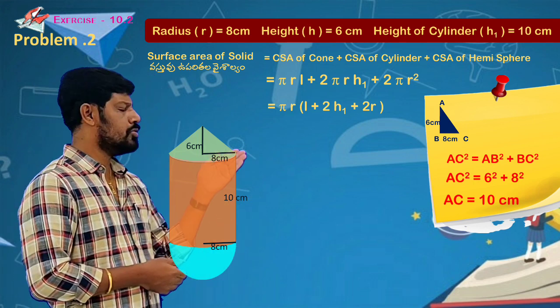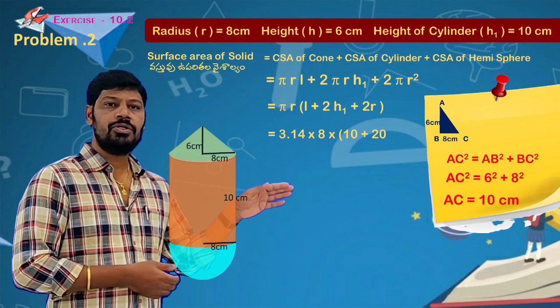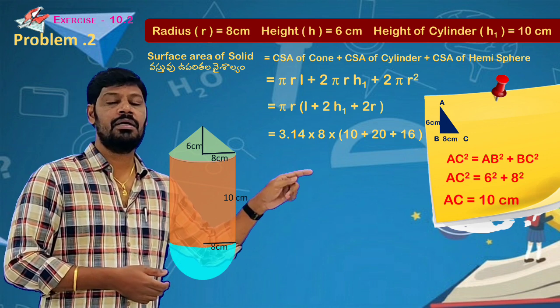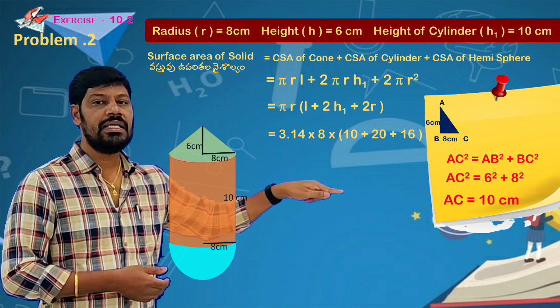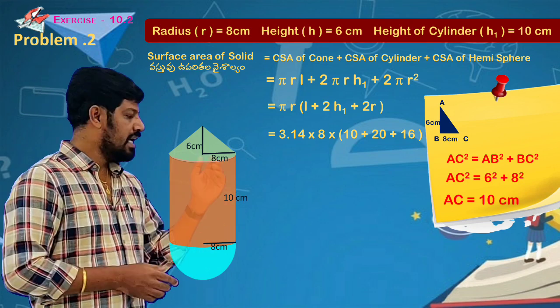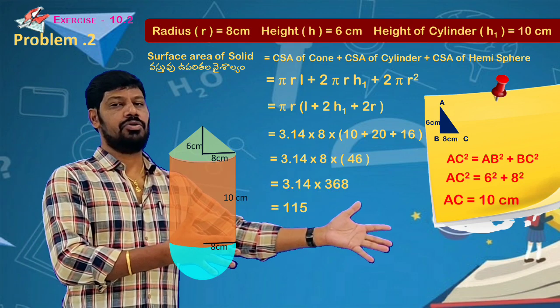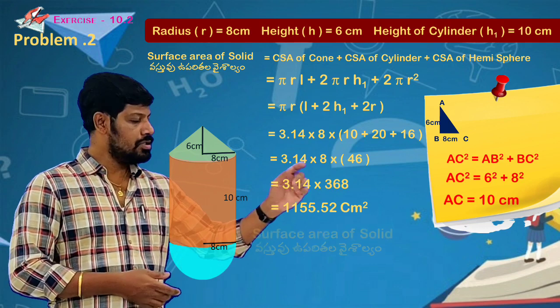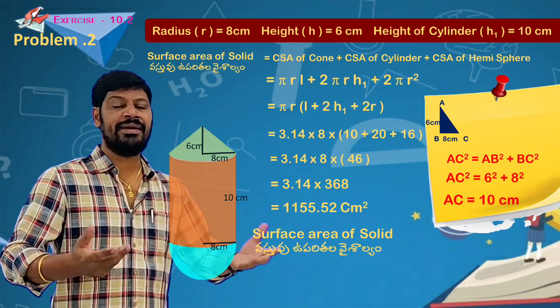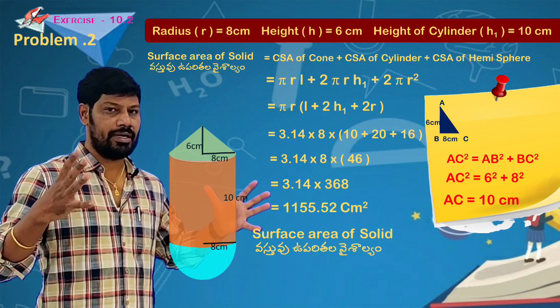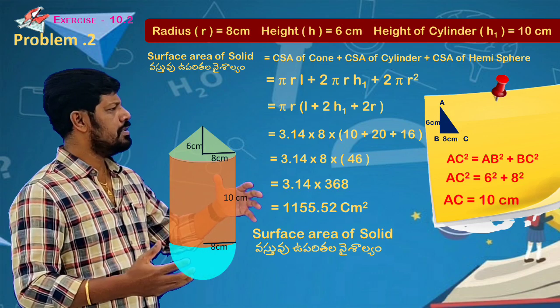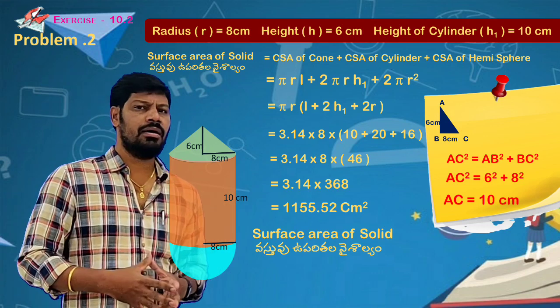3.14 into r value 8 into the bracket: l is 10, 2h is 20, 2r is 16. We substitute and calculate the final answer. Look at the units - this is surface area so it's in square units, not cube. I hope everyone is understanding. We will discuss these types of problems clearly.